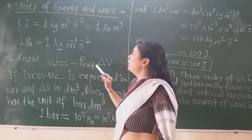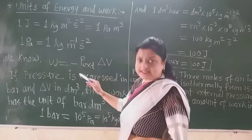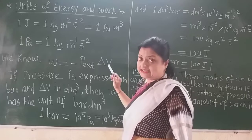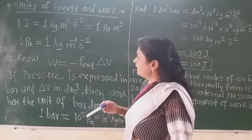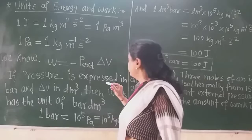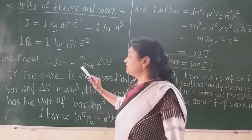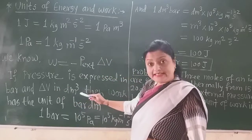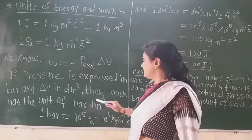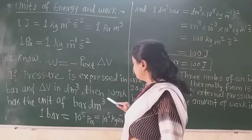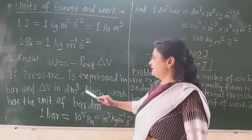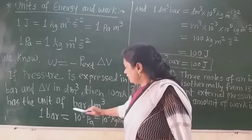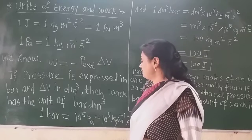Now, if we put the value of pressure in bar and volume in decimeter cube into the work equation, the unit of work becomes bar times decimeter cube. Bar is also a unit of pressure, and the changing volume is expressed in decimeter cube. So the unit of W becomes bar times decimeter cube. Now, 1 bar means how many Pascals?